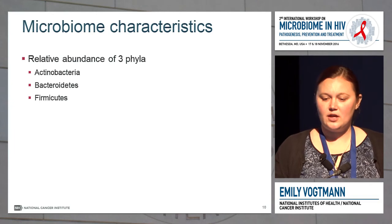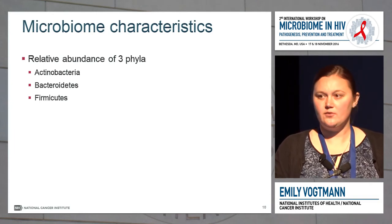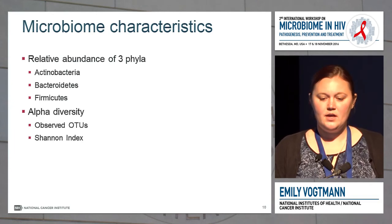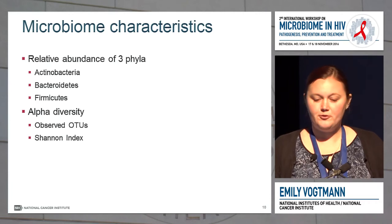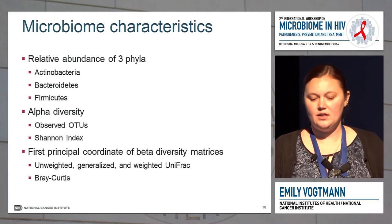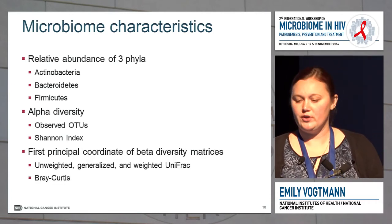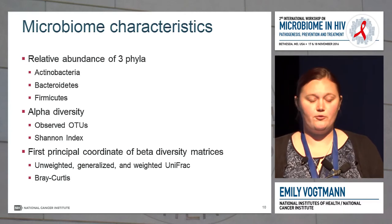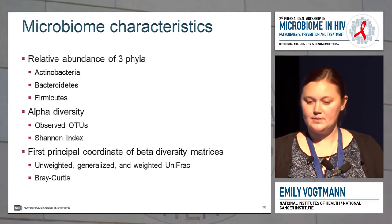We then looked at stability, comparing samples left at room temperature for four days and frozen to the ones that were immediately frozen, to see how leaving them at room temperature would affect the sample. Finally, we calculated accuracy by comparing these samples to the gold standard — the fecal sample with no additive frozen immediately. The characteristics we looked at included the relative abundance of three different phyla, two different measures of alpha diversity, the first principal coordinate of unweighted, generalized, and weighted UniFrac, and also the Bray-Curtis distance.